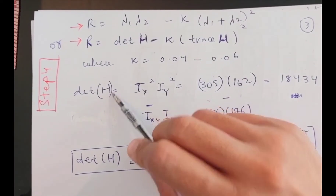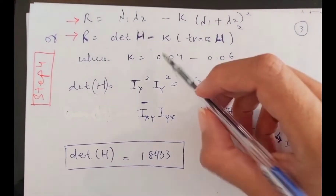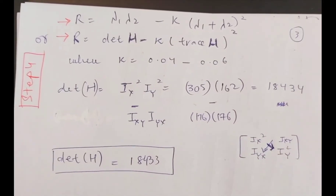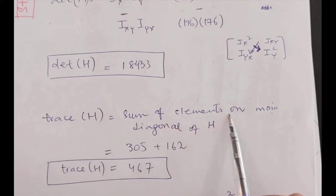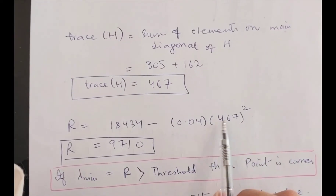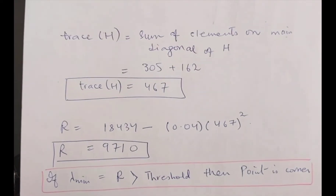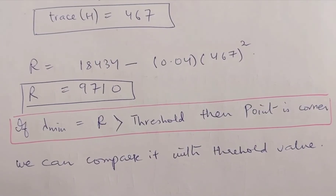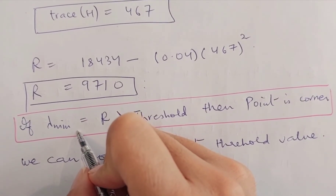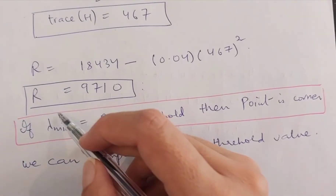Here I find the determinant of the H matrix by multiplying diagonals and subtracting, ending up with 18,434. The trace of the matrix is the sum of elements on the main diagonal. When I plug these values into the equation with k assumed to be 0.04, I get the answer R = 9,710. This value of R represents lambda min. The Harris operator simplifies things by treating R as equivalent to lambda min.